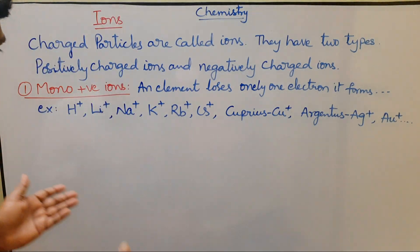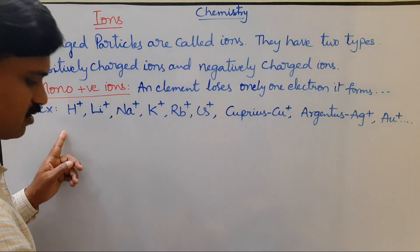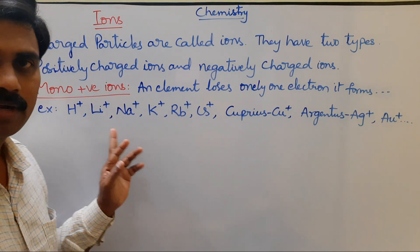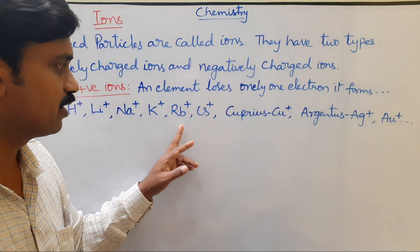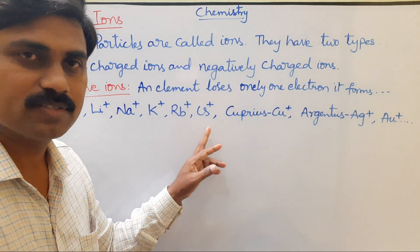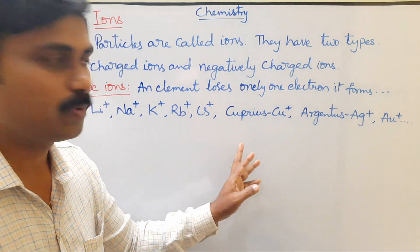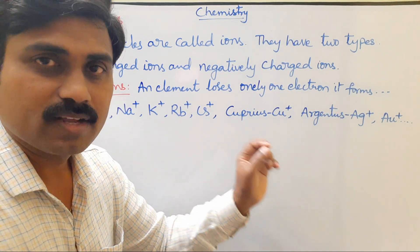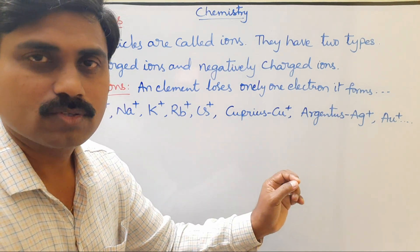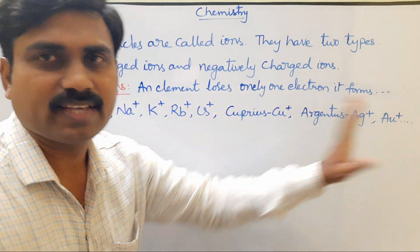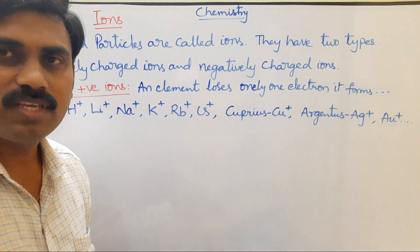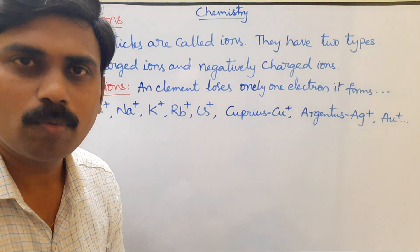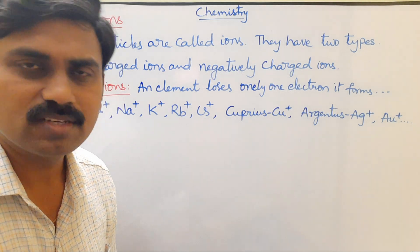Examples of mono-positively charged ions: hydrogen ion H⁺, lithium ion Li⁺, sodium ion Na⁺, potassium ion K⁺, rubidium ion Rb⁺, cesium ion Cs⁺, cuprous ion Cu⁺, silver ion Ag⁺, and gold ion Au⁺. These all have only one positive charge, which is why they are called mono-positively charged ions.